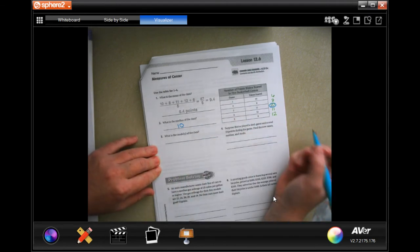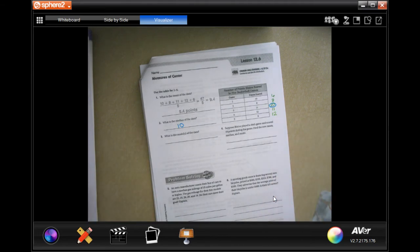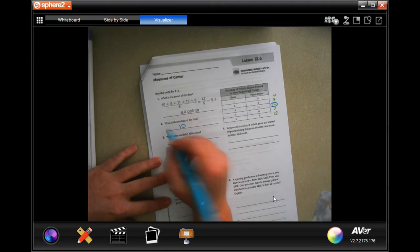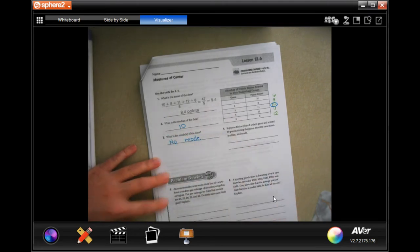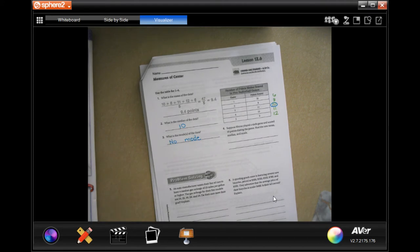Now what is the mode of that data? Well, all the numbers only appear one time. So that means there is no mode. Because if there was one mode, they would all be the mode.